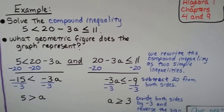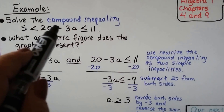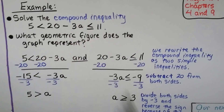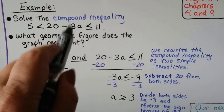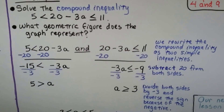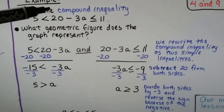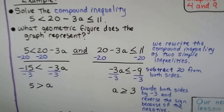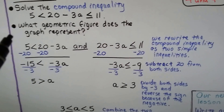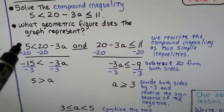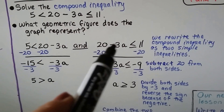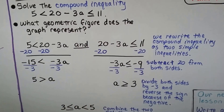Here's an example. We're going to solve the compound inequality: 5 < 20 − 3a ≤ 11. When we have two inequality signs, we start reading in the middle. We also need to determine what geometric figure the graph represents. We rewrite it as two simple inequalities: 5 < 20 − 3a and 20 − 3a ≤ 11.